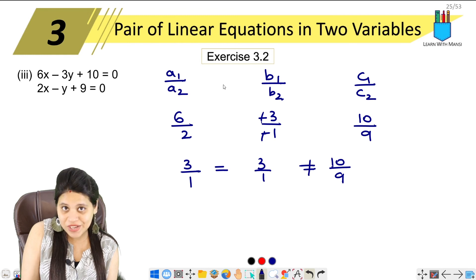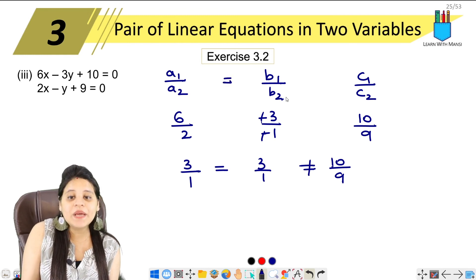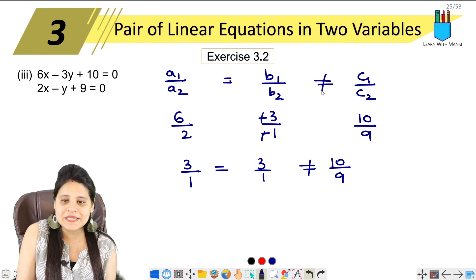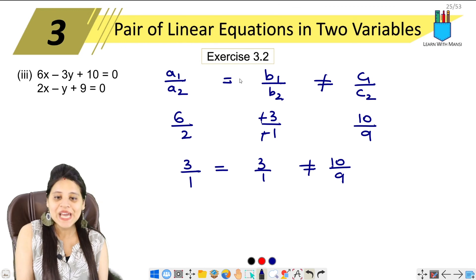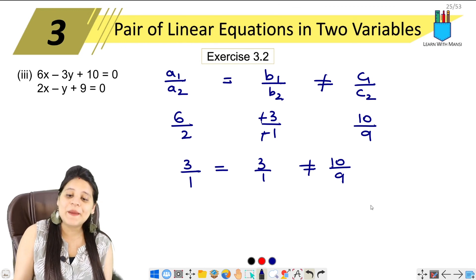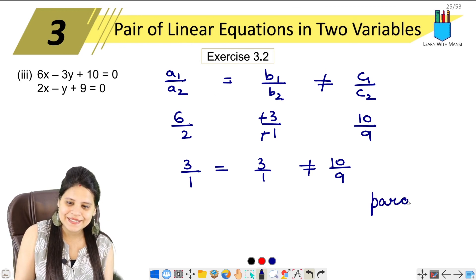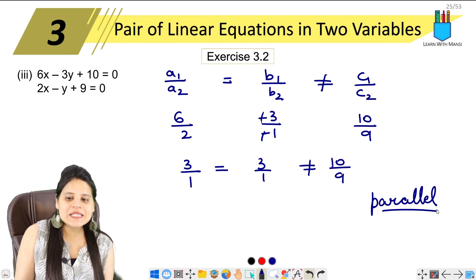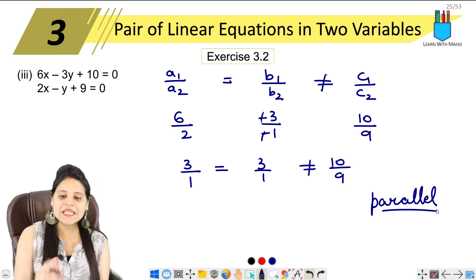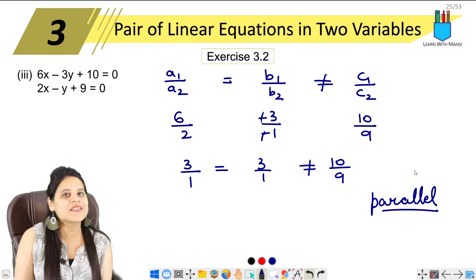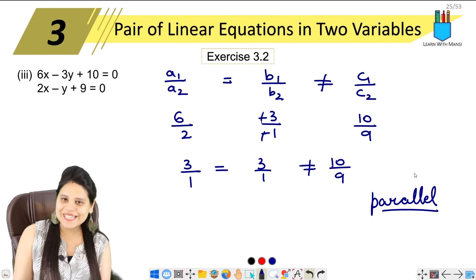So we have a₁ upon a₂ equals b₁ upon b₂, but c₁ upon c₂ is not equal. So therefore, the lines will be parallel. It was not so difficult. So this is our question number 2. Let's move to the next question.